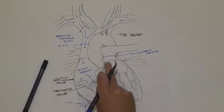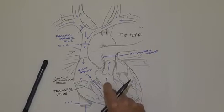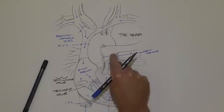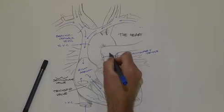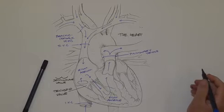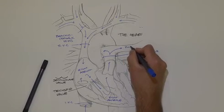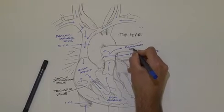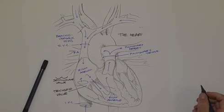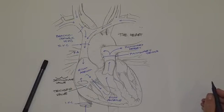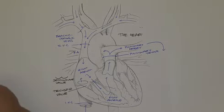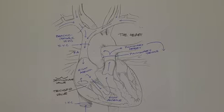The pulmonary trunk is the primary artery here — note that even though it's carrying deoxygenated blood, it is an artery because it's taking blood from the heart to the lungs. The pulmonary trunk then takes blood into the left and right pulmonary arteries, which carry poorly oxygenated blood to the lungs.